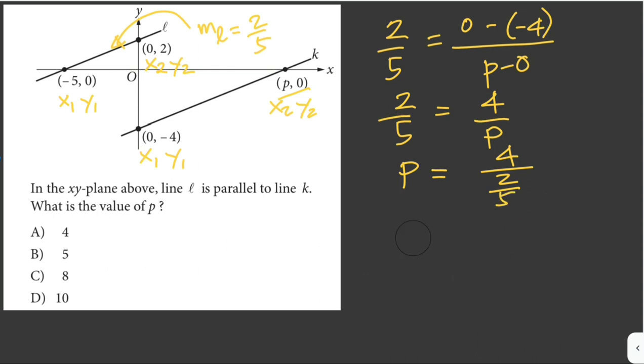And now we can solve: 4 times 5 over 2. 4 is divisible by 2, that cancels out, so this is just 2. Therefore P is equal to 10. So our answer here is letter D, 10.